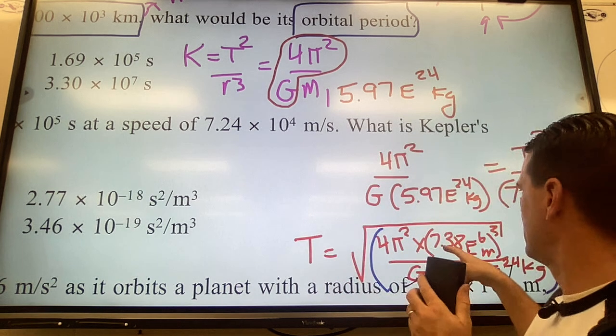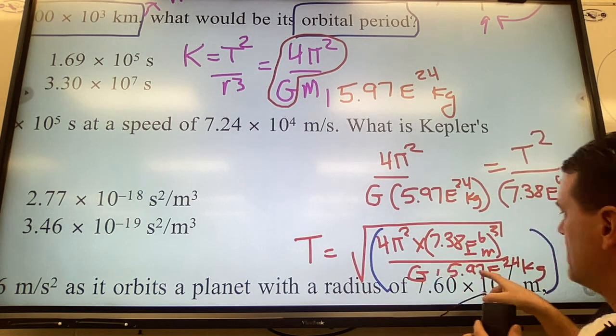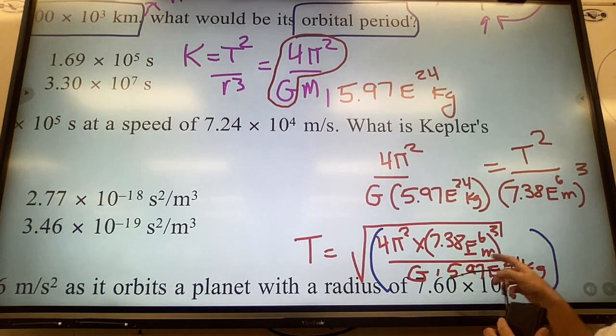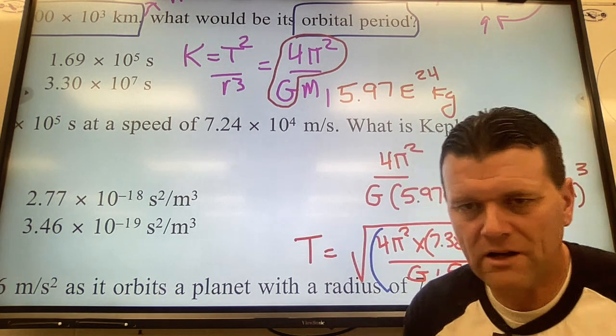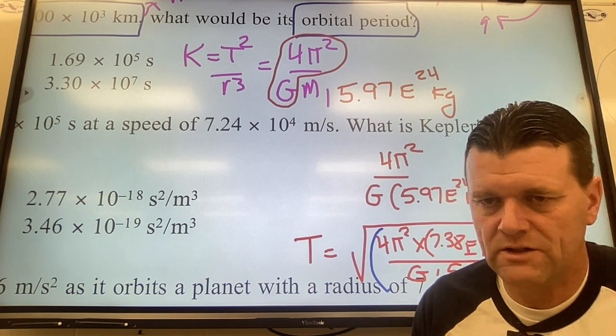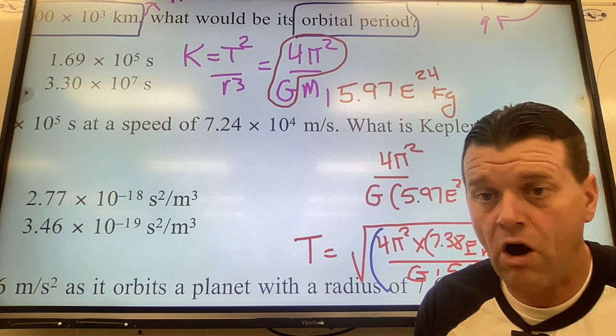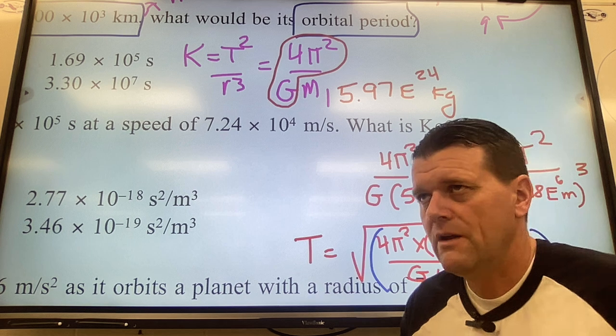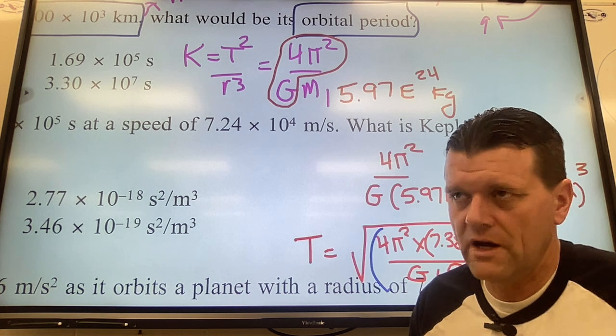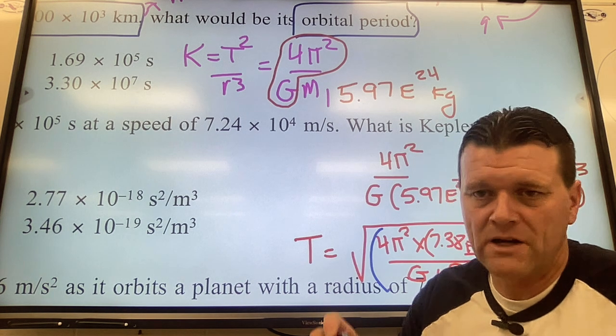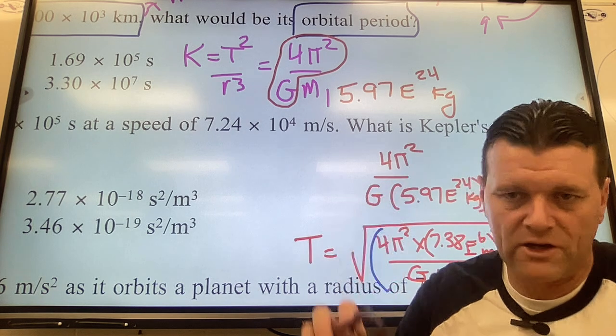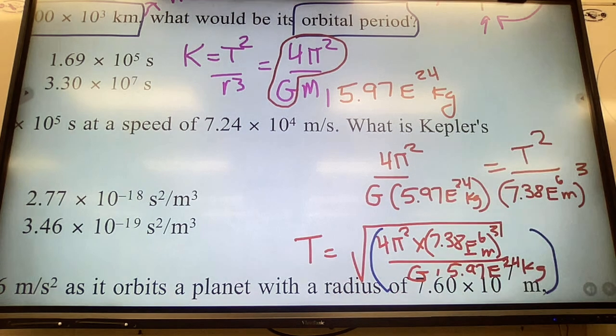You have to get used to that on your calculator, and be really careful entering all these numbers. Use your EE button to keep your life simple. We've got these big numbers - 7.38×10⁶, then 5.97×10²⁴. Use the EE button and it'll make it a lot easier. You won't have to stress about brackets and you won't make mistakes as often.